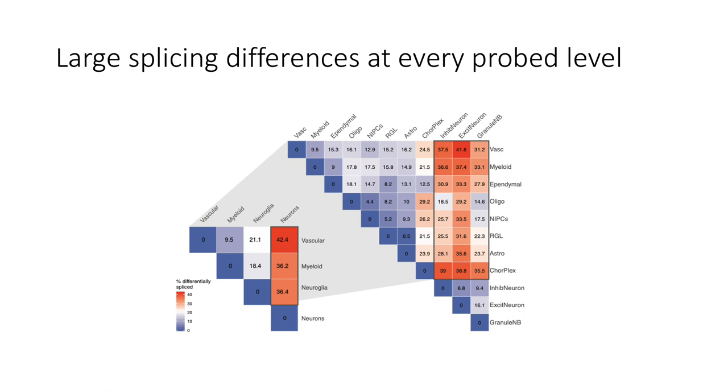However what was really interesting was that the choroid plexus, which is this region right outside the hippocampus that is responsible for secreting cerebrospinal fluid, that is also really different from the rest of the non-neurons.